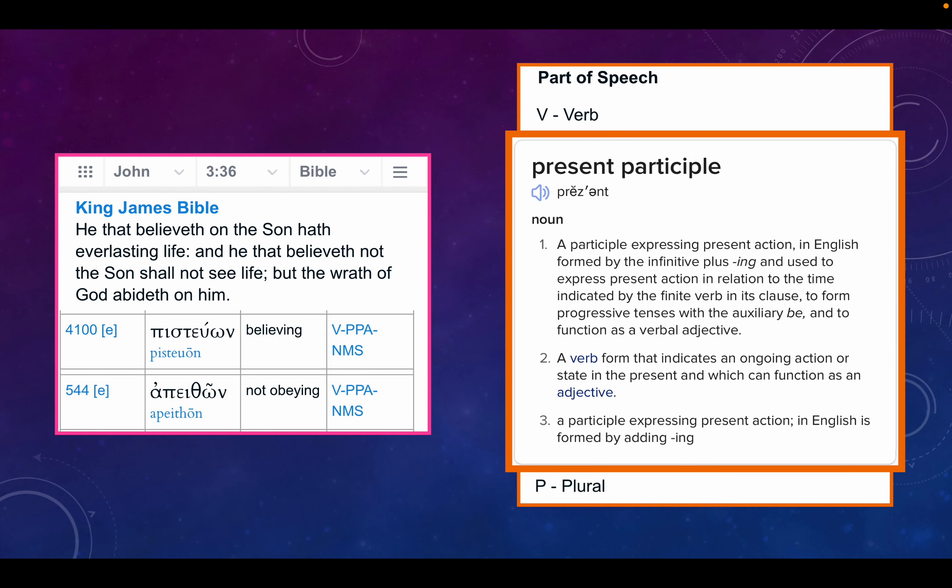John chapter 3, verse 36. He that believeth on the Son hath everlasting life. And he that believeth not the Son shall not see life, but the wrath of God abideth on him. Pisteon, believing, present participle.